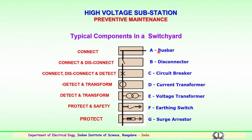The main important component is the bus bar. The main function of the bus bar is to connect and deliver the loads or transmit the loads to the required centers. Then we have the disconnector switch — the main function of the disconnector switch is to connect and disconnect the circuit for maintenance, for any upgradation of equipment in the substation, or for changing over of equipment or relays.